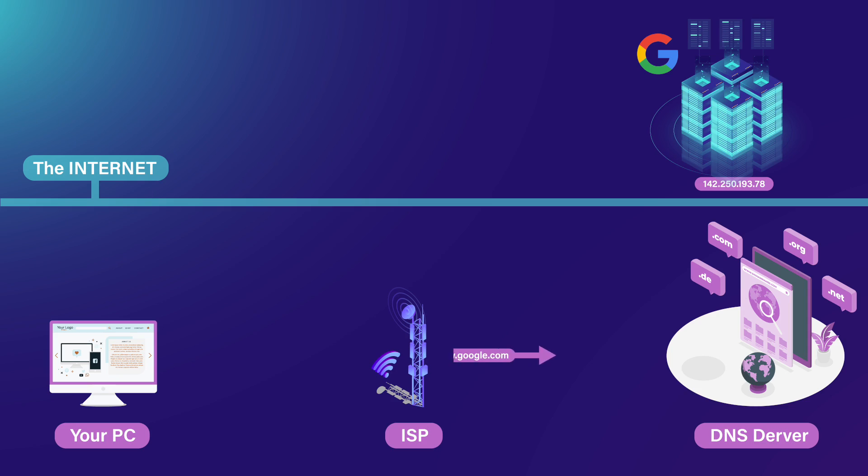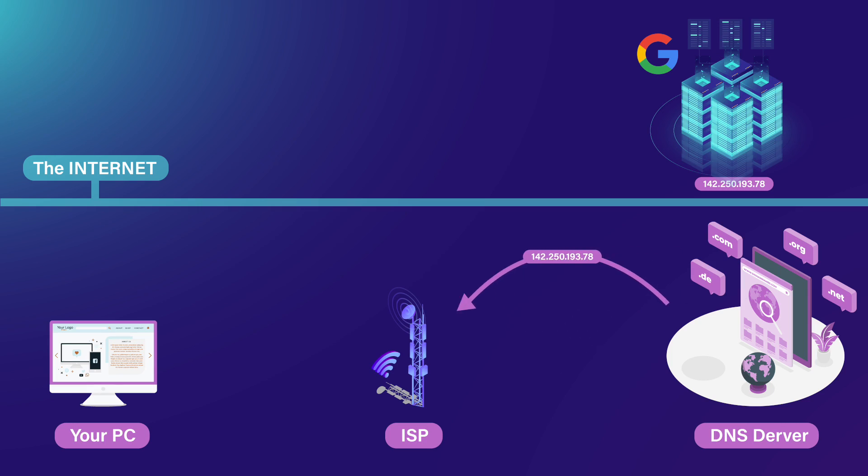When the ISP receives your message, it sends the data to the DNS server — the Domain Name System server. The domain name server compares your input and searches for the IP address of google.com. When it finds that IP address, it sends it back to the ISP and the ISP sends it back to your PC.